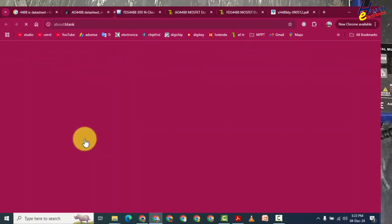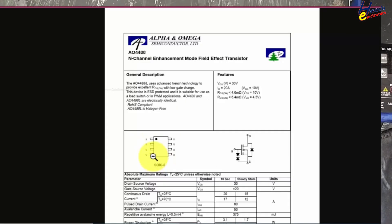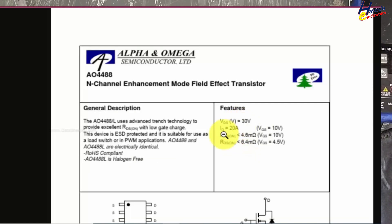Let's see this datasheet. AO double four double eight N-channel enhancement mode field effect transistor FET. Pin 1, 2, 3 are source pins, pin number 4 is gate, 5, 6, 7, 8 are drain pins. There is a parasitic diode between source to drain and there is also ESD protection for gate. 30 volt, 20 amperes, and 4.6 milliohms RDS.